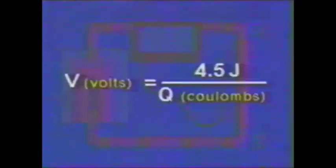Suppose in this example we find that three coulombs of charge flowing through the heating element cause the element to give off 4.5 joules of heat energy. We can calculate the potential difference between A and B using our equation. So in this circuit, each coulomb of charge loses 1.5 joules of energy as it flows from A to B. Since potential difference is measured in volts, we can say that the potential difference across AB is 1.5 volts.